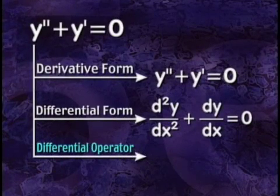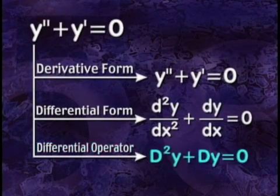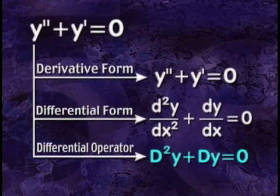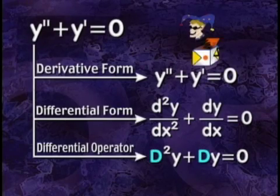The third form, the differential operator form, looks like this, with capital Ds representing the derivative. This is read, the second derivative of y plus the first derivative of y equals zero. Here, d is called a differential operator. We won't use this notation in the tape, but you should be aware of it in case the professor springs it on you in class.